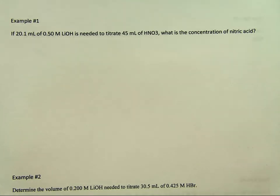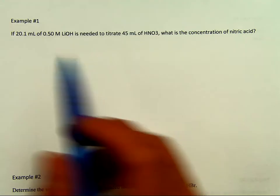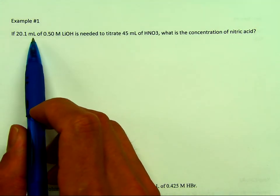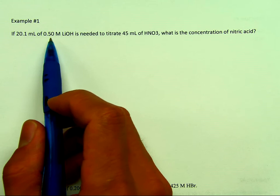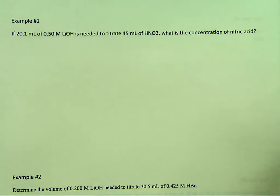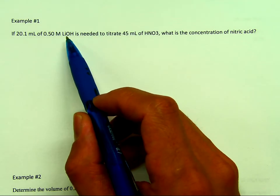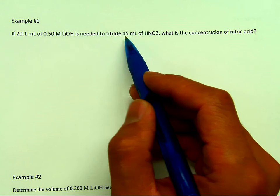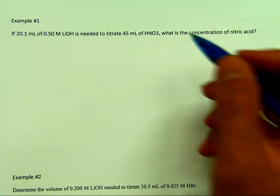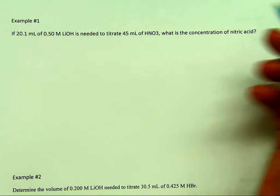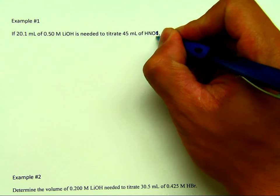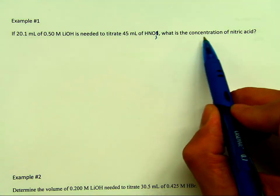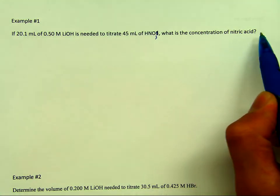Example problem one: If 20.1 milliliters of a 0.5 molarity concentration of lithium hydroxide is needed to titrate 45 milliliters of nitric acid — this should be a 3 here — what is the concentration of nitric acid?